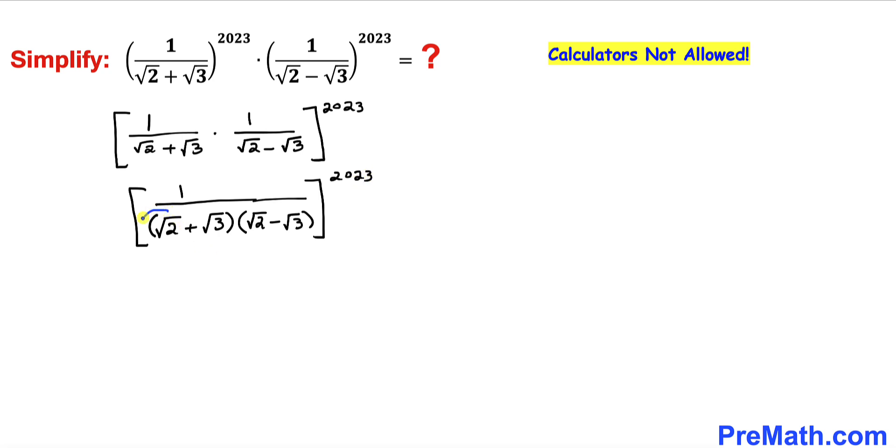Now let's focus on this denominator part, and here I have copied it down. Let's recall this famous identity: a plus b times a minus b equals a square minus b square. Let me suppose that this is our a and this is our b. Then we can write this as square root of 2 whole square minus square root of 3 whole square.